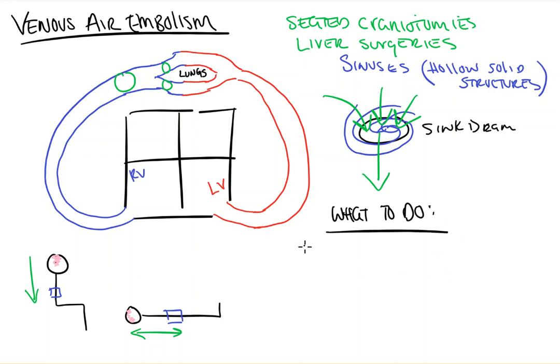Now let's take a look at what we can do about it in the operating room. Step one: always alert the surgeon, ask him to stop whatever he's doing, and tell him to flood the field with saline — it'll help get saline into the blood, which is fine, so long as it's not air.